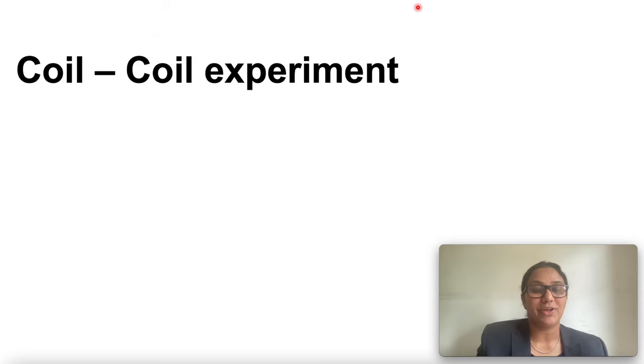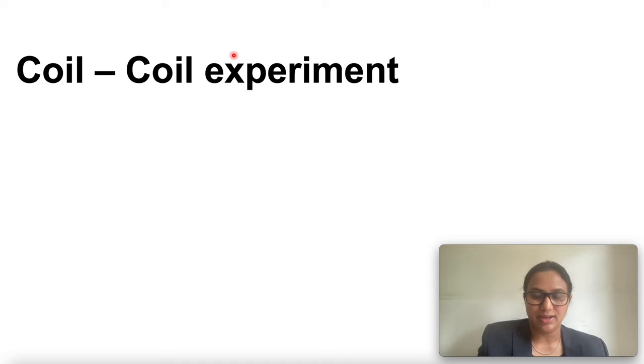Next experiment is coil-coil experiment. Let us now perform a variation of activity in which the moving magnet can be replaced by a current carrying coil and current in the coil can be varied. As you can see in this diagram, take two different coils of copper wire having large number of turns, say 50 or 100 turns respectively. Insert them on a non-conducting cylindrical rod.